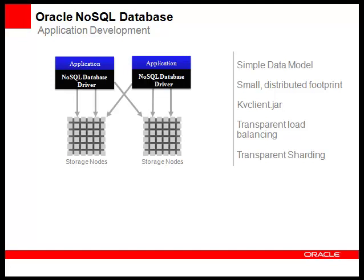That's what I mean by transparent sharding. Because of this, we can develop our applications using kvLite before testing and deploying with a much larger number of shards. The intelligent driver determines which shard and which node to efficiently and quickly retrieve data with minimal communication.